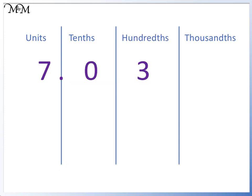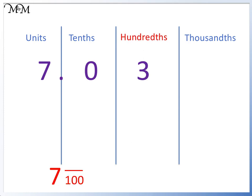7.03. Again, we can simply write down the whole number, which is 7. Now we can look at the decimal. 0.03 finishes in the hundredths column, so our fraction is out of 100. Reading across from the decimal point, we can see that we have 3, so we have 3 hundredths. Our answer is 7 and 3 hundredths.